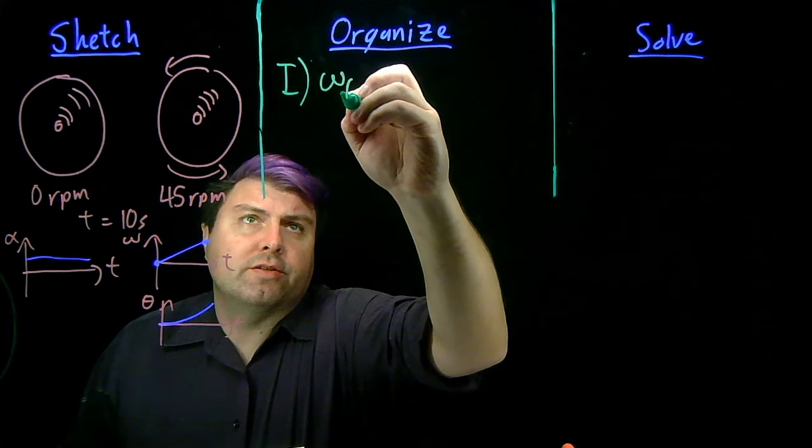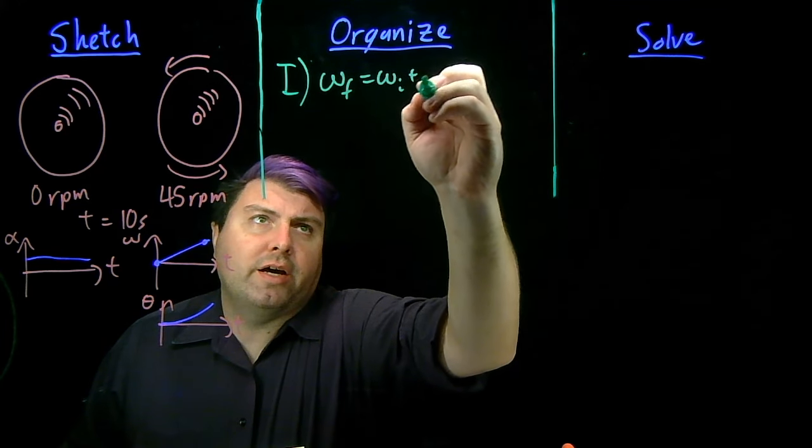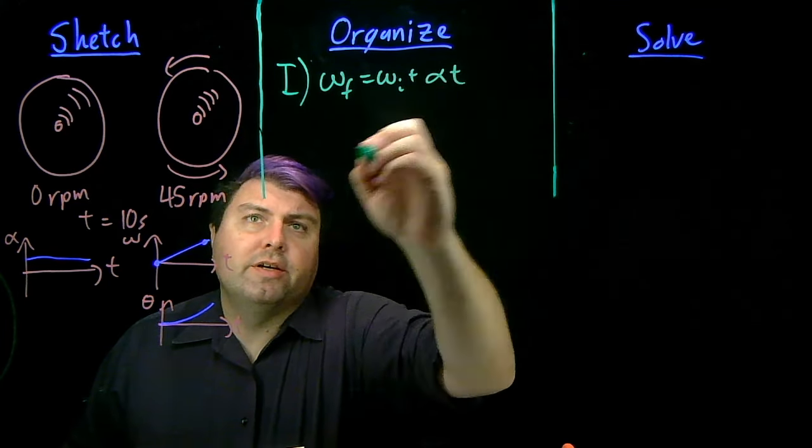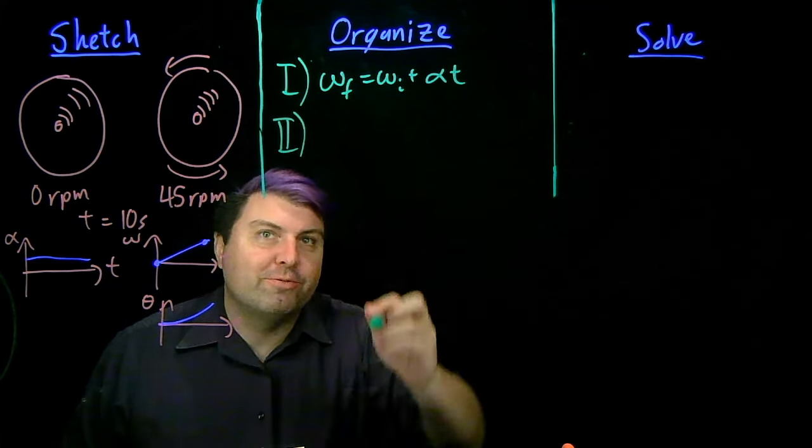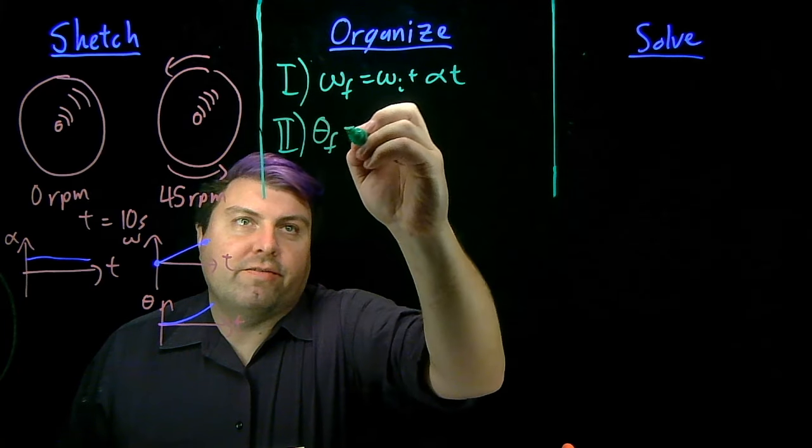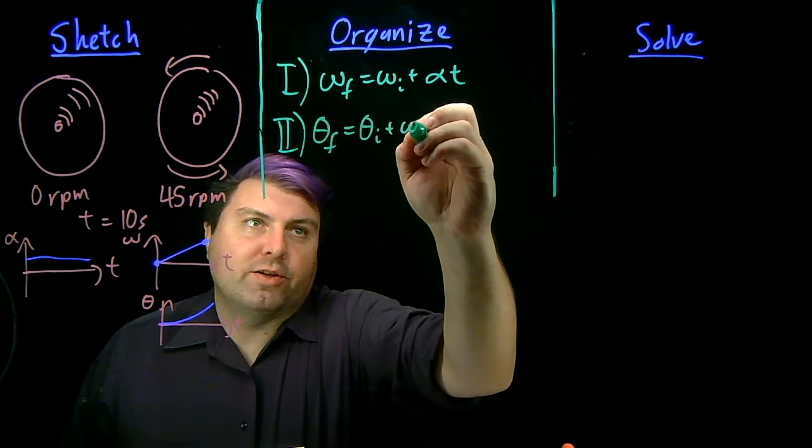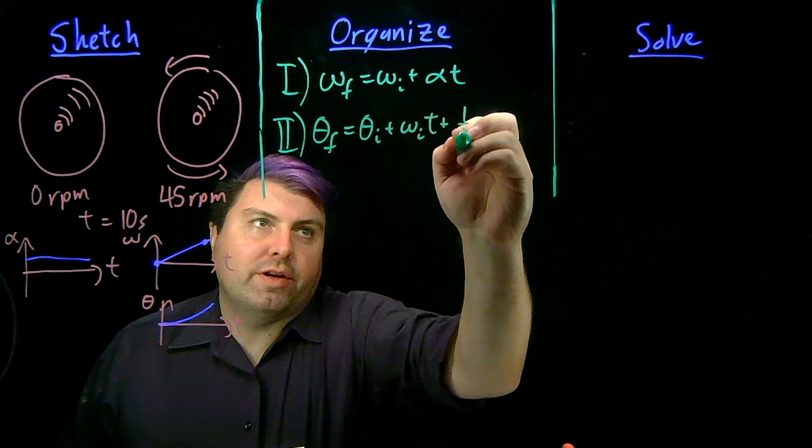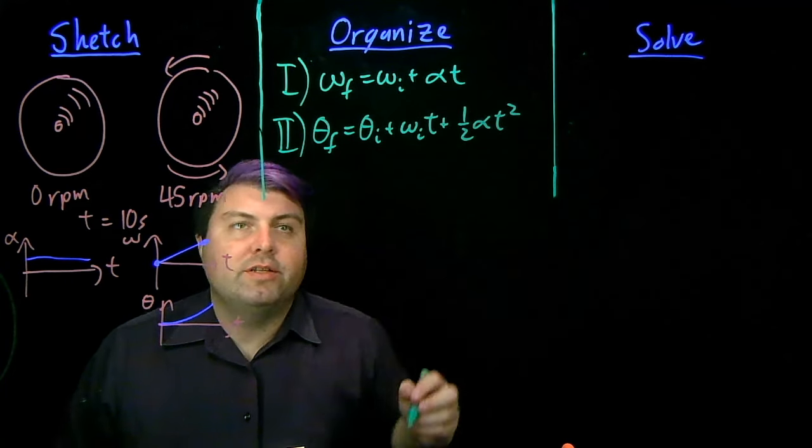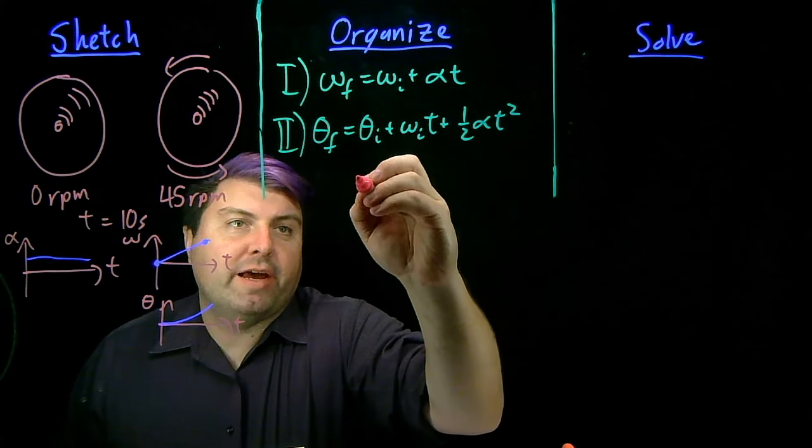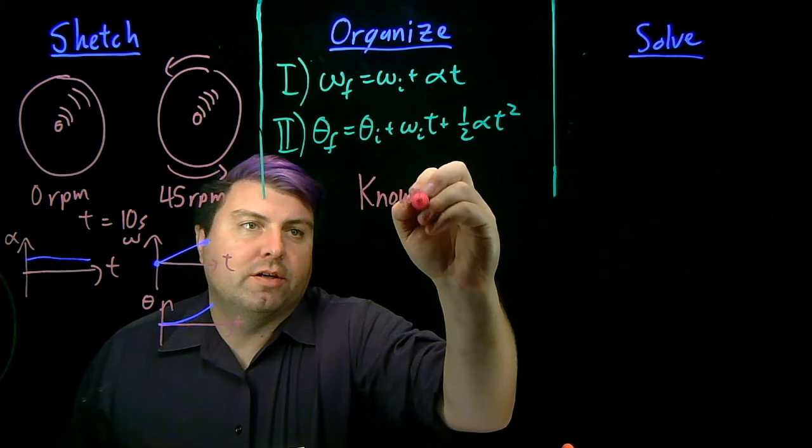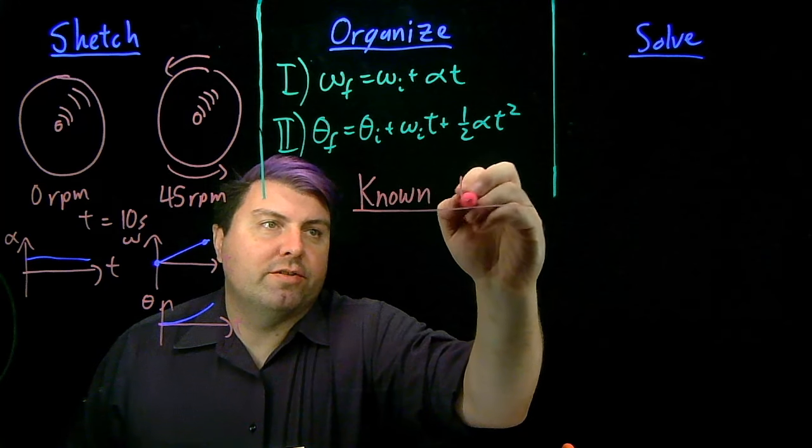So equation one is omega f equals omega i plus alpha t. And we can write Greek letters for all of the Greek characters we're using. So theta f equals theta i plus omega i times t plus one-half alpha t squared. And just like we had with one-dimensional kinematics, we can compile a table of knowns and unknowns.